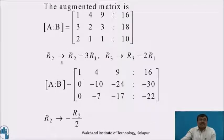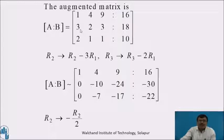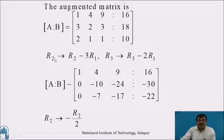The augmented matrix AB equals [1, 4, 9, 16; 3, 2, 3, 18; 2, 1, 1, 10]. Now reduce the coefficient matrix to a diagonal matrix. The first step is to make the first elements of the second and third rows equal to 0 using the first element of the first row by applying elementary row transformations: R2 = R2 − 3·R1, R3 = R3 − 2·R1.